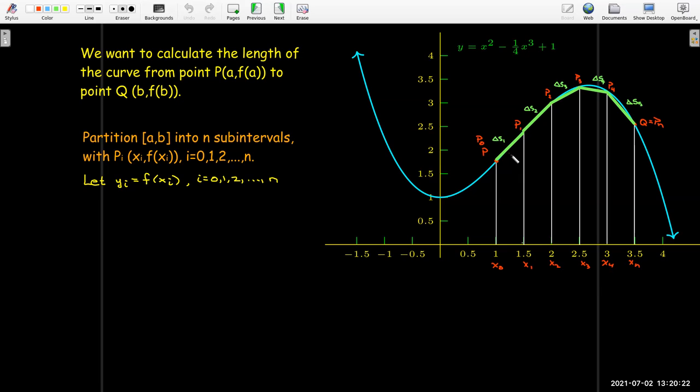Now, each line segment, I would use the distance formula to calculate the approximate length of that portion of the curve. So delta S_i will be the length of the distance from the point P_{i-1} to P_i, just the length of that line segment. And we'll use the distance formula for that.